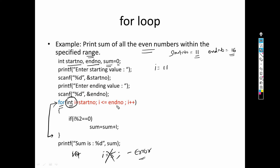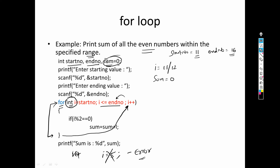The condition is i <= end_number. So 11 <= 16 — condition is true, we move in. i modulo 2: 11 mod 2 gives 1, so this condition is false and the sum statement is not executed. We jump to i++, so i becomes 12. Again the condition: 12 <= 16 is true. 12 mod 2 gives 0 — condition true. Sum equals sum plus i: sum is 0 plus 12, so sum becomes 12. Loop completes, exit statement: i++ gives i=13. Condition 13 <= 16 is true. 13 mod 2 gives 1 — false, sum statement skipped. i++ gives i=14. 14 <= 16 is true. 14 mod 2 gives 0 — true. Sum equals 12 plus 14 = 26, so sum is now 26.